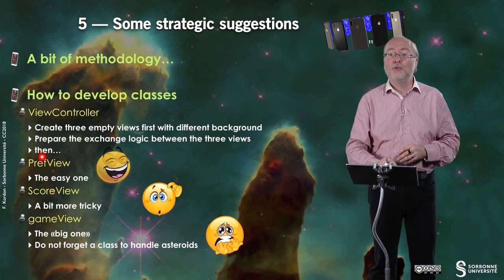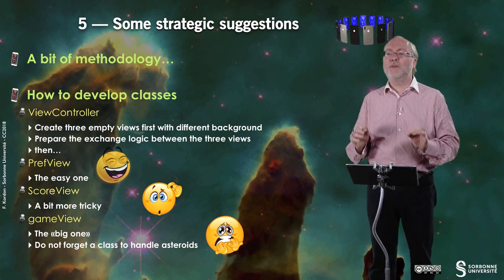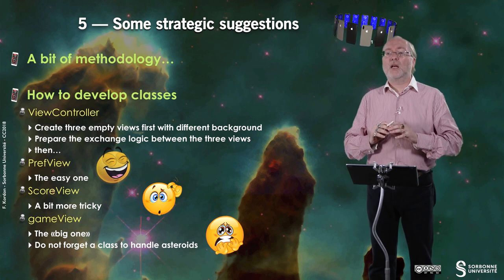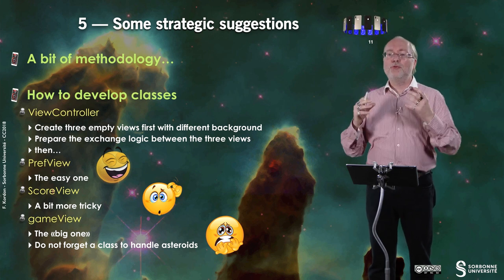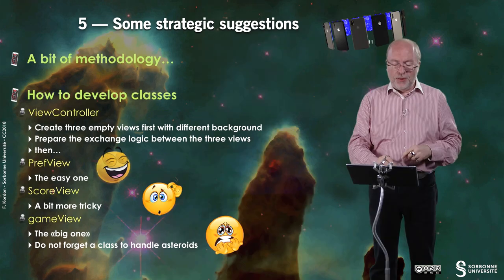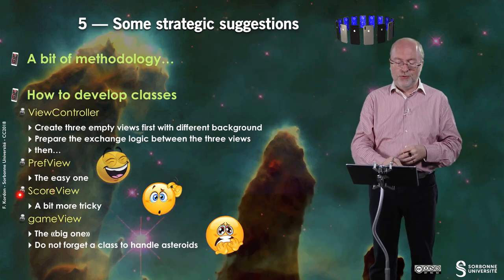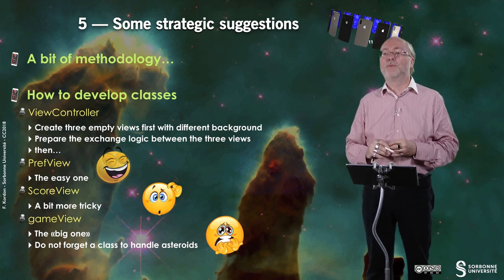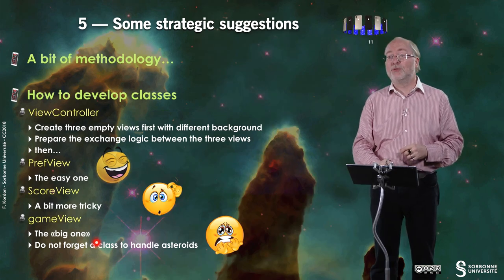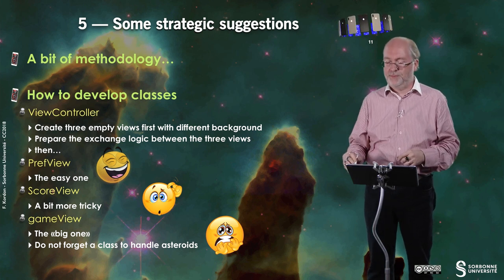A bit of strategic suggestion — basically a bit of methodology. What I will suggest to you is to start with the view controller, and create just three empty views — preview, score view, game view — which are just empty with different background colors. If you use different background colors, you know which one is operated, and you just implement the logic of action between these three views. Then you implement preview, which is the easy one. Then score view, which is a bit more tricky. And finally game view, which is the big one — Game with a capital G. And once you have done it, everything will be okay. Of course you may have another class — I suggest to handle asteroids or to describe an asteroid.